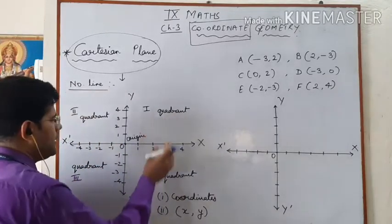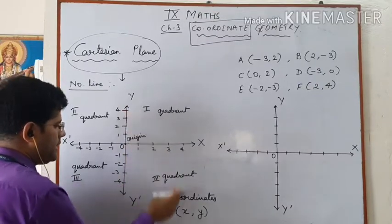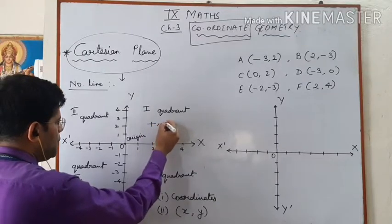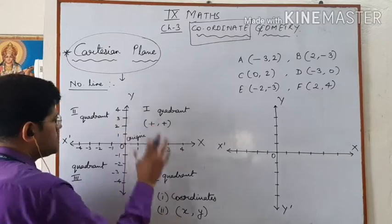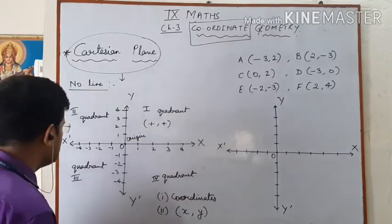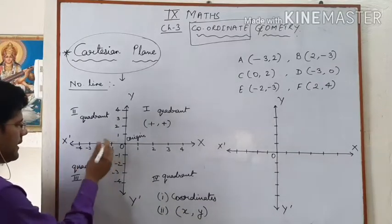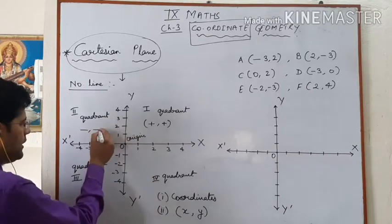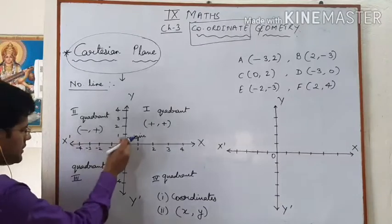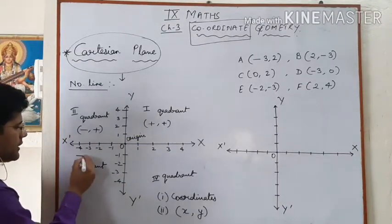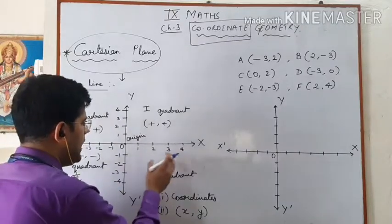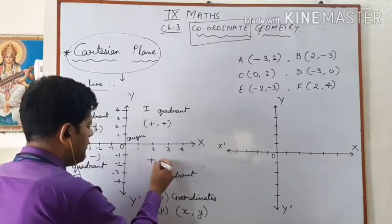Now I want to tell you the sign conventions for this Cartesian system. In the first quadrant, both X and Y are positive, so we write positive, positive (+, +). In the second quadrant, X is negative and Y is positive, so we write negative, positive (−, +). In the third quadrant, both X and Y are negative, so we write negative, negative (−, −). In the fourth quadrant, X is positive and Y is negative, so we write positive, negative (+, −).